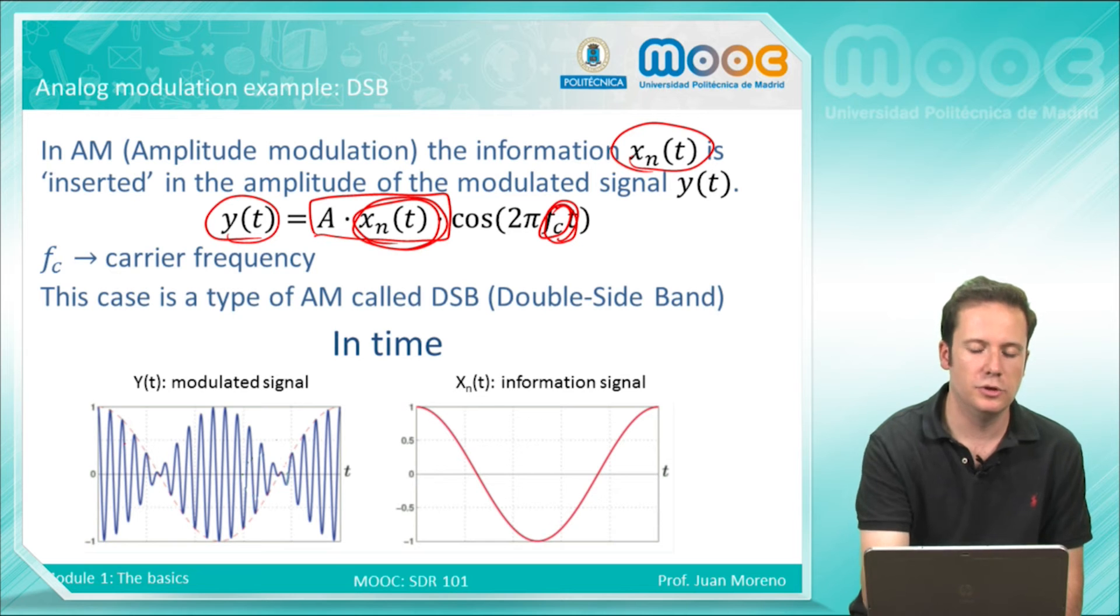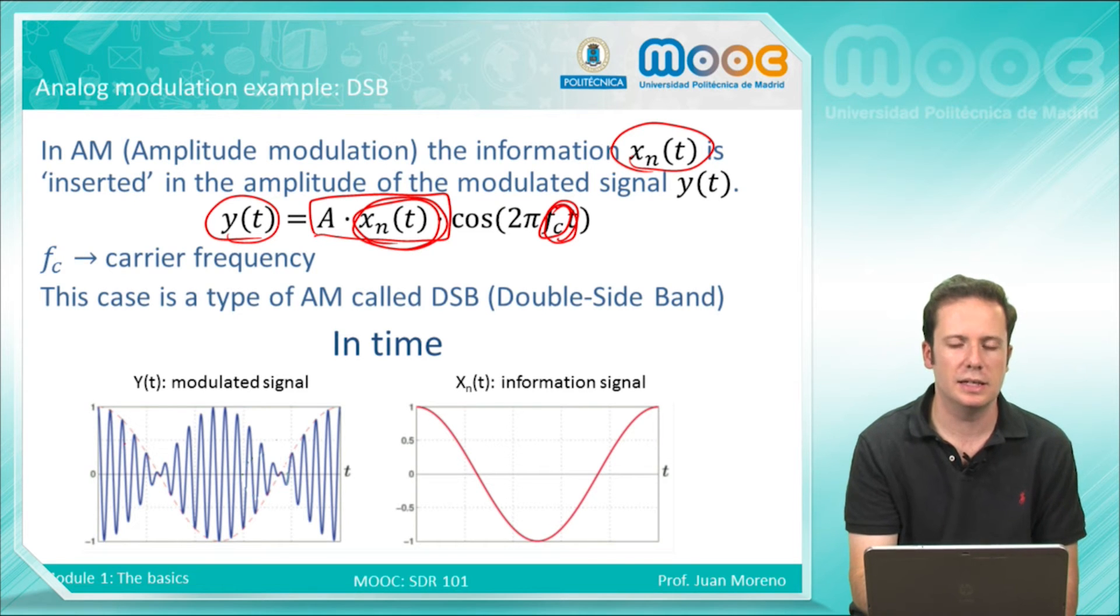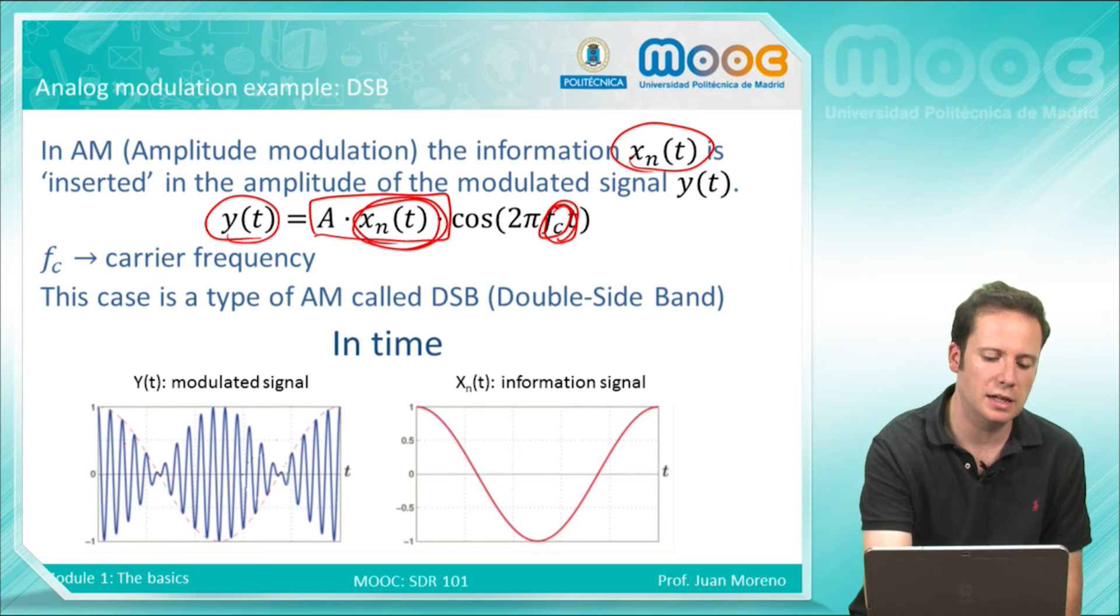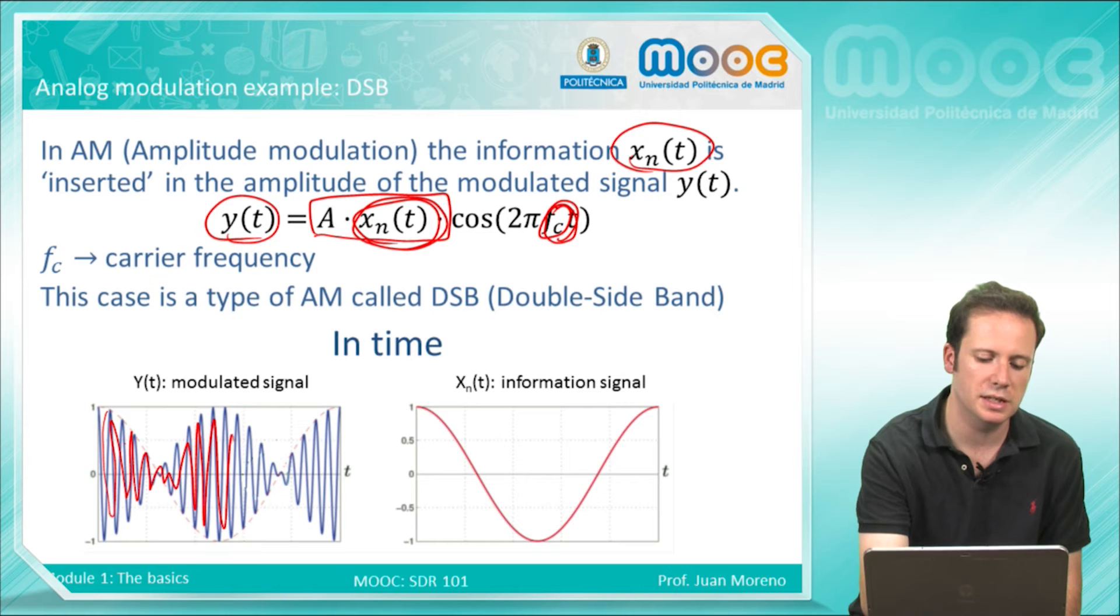Here, if you look at the picture on the left, you can see that the signal changes very rapidly. This frequency is the carrier frequency, but if you only look at the slow changes in the amplitude of the signal, you can reconstruct the information signal.